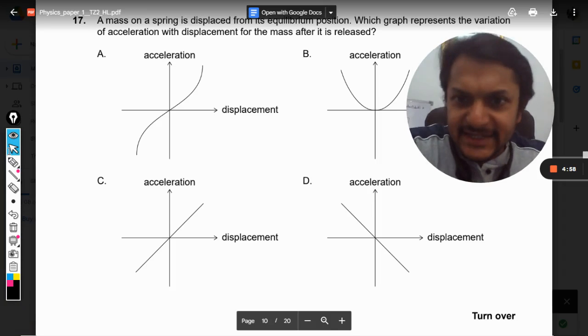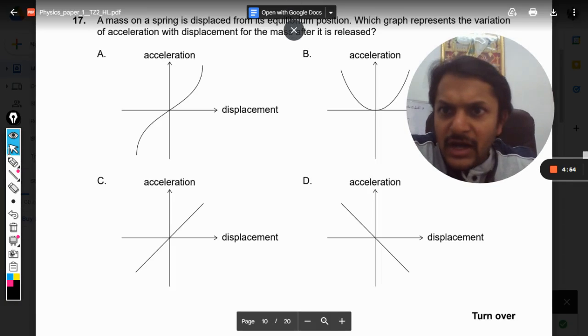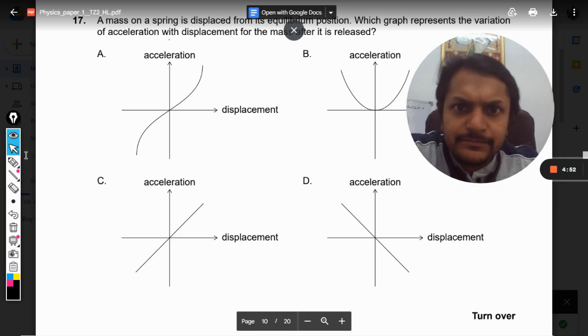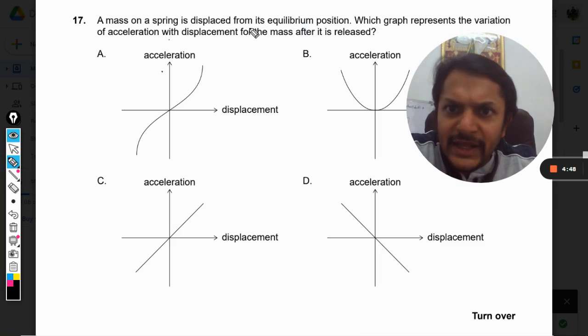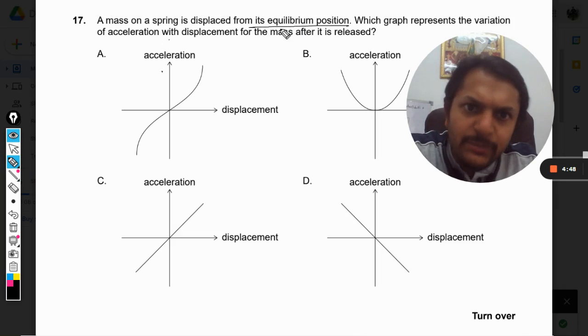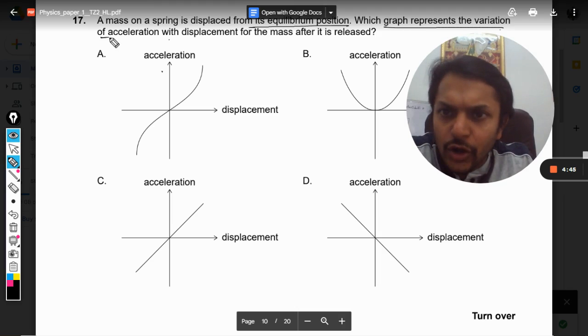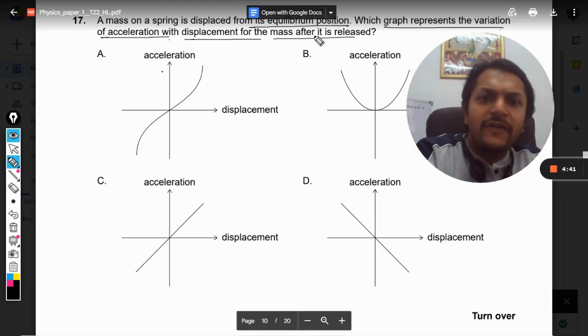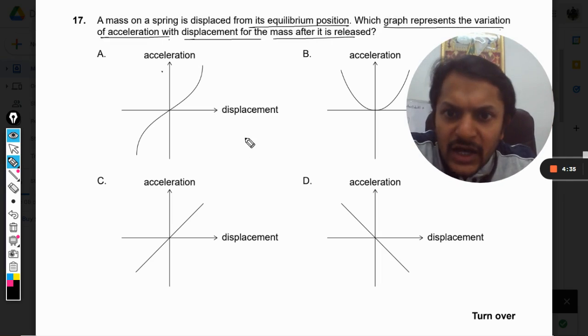Okay, dear students, let us see what is there in this question. A mass on a spring is displaced from its equilibrium position. Which graph represents the variation of acceleration with displacement for the mass after it is released?